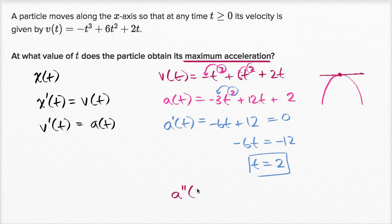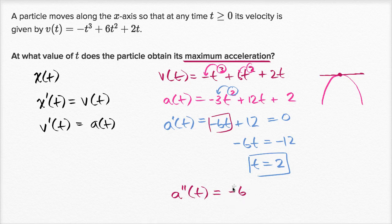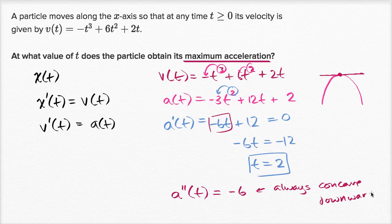Taking the second derivative of our acceleration function gives us -6, since the derivative of -6t is -6 and the derivative of a constant is zero. So the second derivative is always negative, meaning we are always concave downward. By the second derivative test, at t = 2 the second derivative of our acceleration function is negative, confirming this is our maximum.